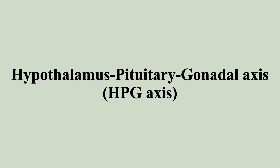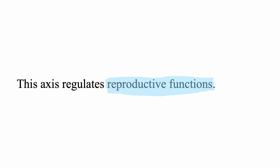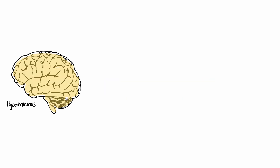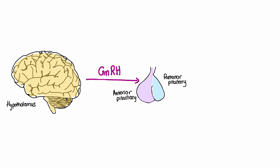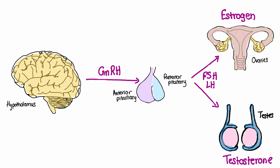Lastly, the hypothalamus pituitary gonadal axis, also called the HPG axis, regulates reproductive function. The hypothalamus releases gonadotropin-releasing hormone, which signals the pituitary gland to release follicle stimulating hormone (FSH) and luteinizing hormone (LH). FSH and LH then stimulate the ovaries in females and the testes in males to produce sex hormones such as estrogen and progesterone.